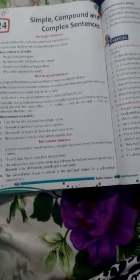The complex sentence is made up of one principal clause and one or more subordinate clauses. The principal clause makes good sense by itself. The subordinate clause does not make good sense by itself and cannot stand alone. It depends for its full meaning upon the principal clause. The subordinate clause is joined to the principal clause by a subordinate conjunction.